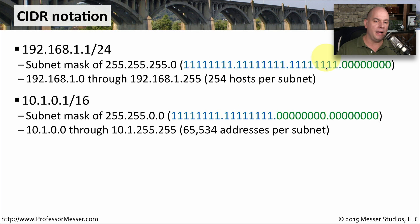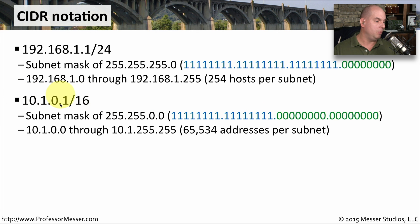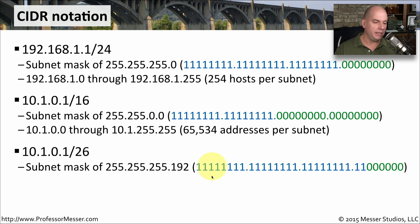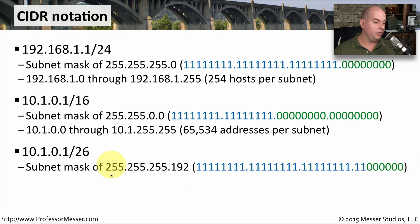We've separated out in these 8-bit octets, but of course we could use any number of bits we would like as a subnet mask. That is, after all, one of the benefits of a classless-based subnetting system instead of the older class-based system. So we could take the same IP address, 10.1.0.1, and subnet it with a 26-bit subnet mask. If we were to look at this in binary form, you can see that we now have 26 ones — we're actually two bits into the last octet. If we were to write this out in decimal, it would be the same as saying 255.255.255.192.